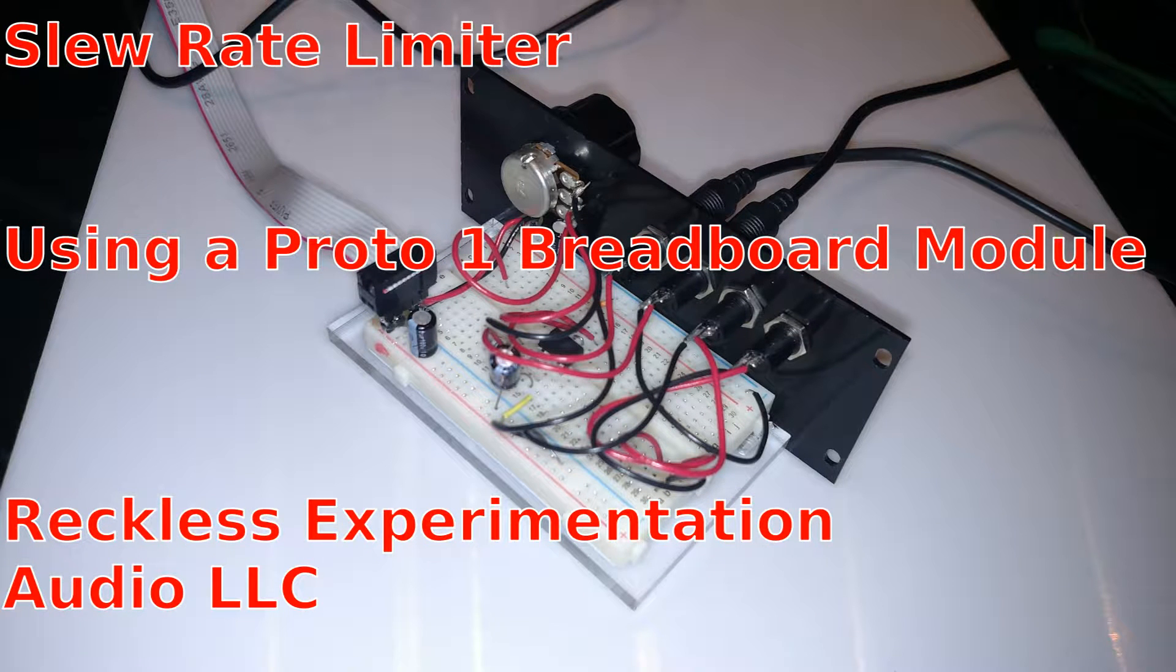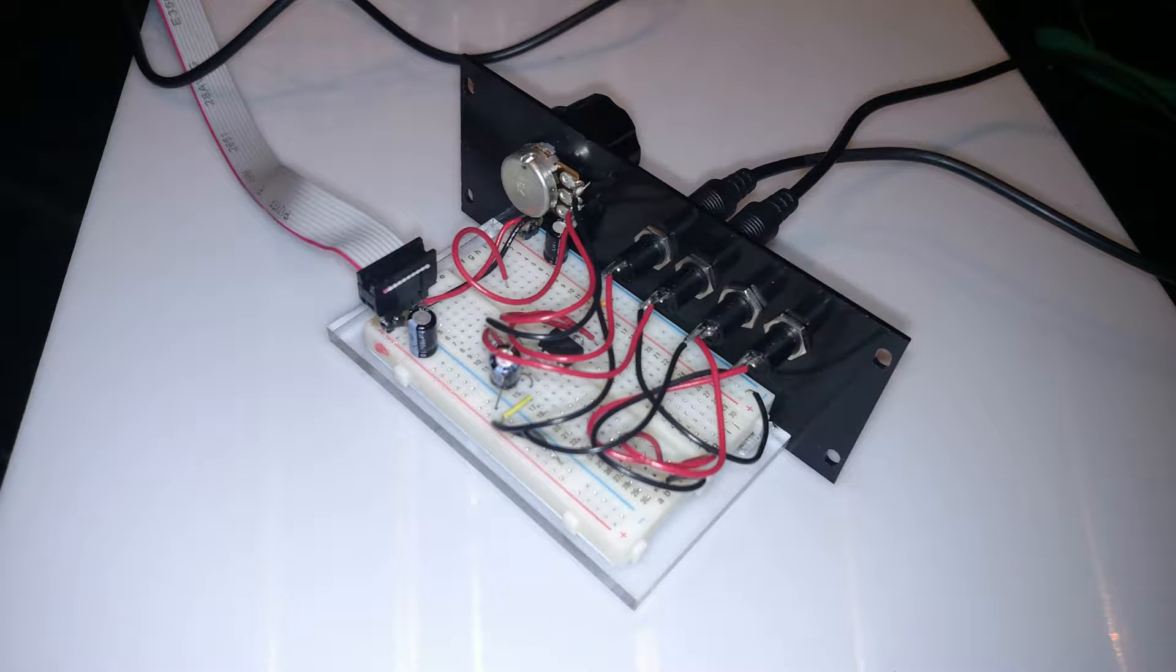Today we are going to make a slew rate limiter using a Reckless Experimentation Audio Proto-1 Eurorack breadboard module. The parts list and circuit schematic are in the description below.